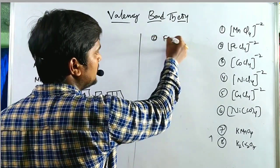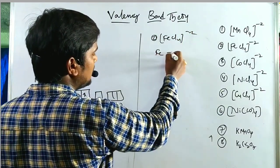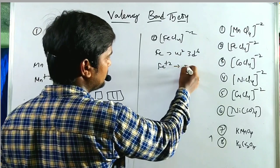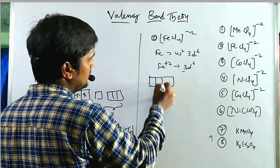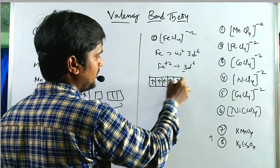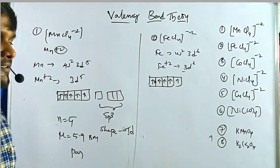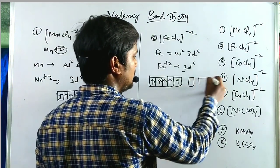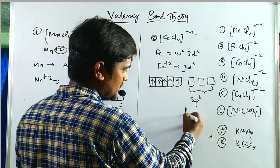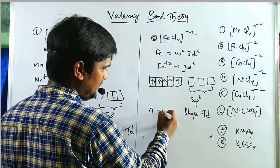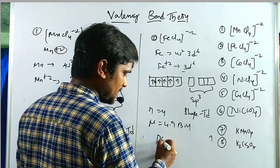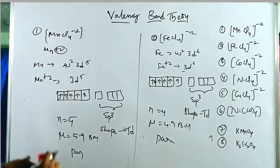Second tetrahedral example: [FeCl₄]²⁻. Iron configuration is 4s² 3d⁶. Fe²⁺ gives 3d⁶ configuration. Five electrons are singly filled and the 6th electron pairs up. Using 1 s and 3 p vacant orbitals, hybridization is sp³, shape is tetrahedral. n = 4, μ = 4.9 Bohr magnetons — paramagnetic. Magnetic measurements confirm the paramagnetic nature of these complexes.